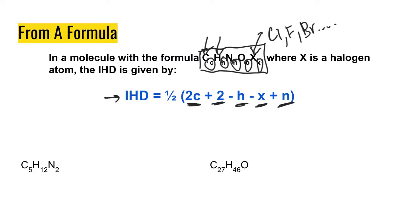Let's apply this to a couple of examples here. In our first one, our IHD is equal to ½ times, we have 2 times 5 carbons, and then we have to add 2. Then we're going to take away the number of hydrogens, which is 12, and we're going to add the number of nitrogens, which is 2. So that's going to give us 10 plus 2 is 12, minus 12 makes that 0, plus 2 makes that 2, divided by half gives us an IHD of 1.